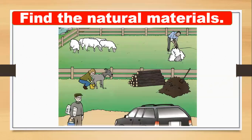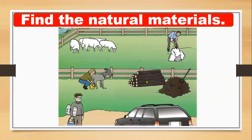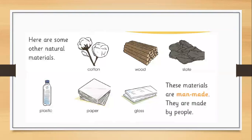Look at this picture and find the natural materials. You can see a car and a newspaper — these things are man-made. But the sheep, trees, soil, and animals are all natural materials. Wool from sheep is natural. The car and newspaper are made by man, so you call them man-made.